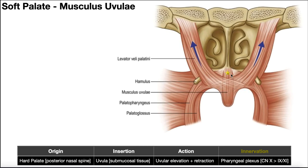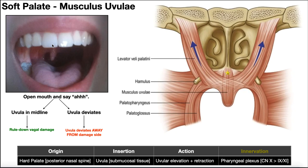Unlike levator palatini, which is clearly two muscles on either side, musculus uvulae is essentially one midline muscle. However, we can think of it as split down the middle, with the left half innervated by the left pharyngeal plexus and the right half by the right pharyngeal plexus. This is extremely important when checking for dysfunction of the vagus nerve, cranial nerve 10. When a person opens their mouth and says 'ah,' the uvula should elevate and retract, with equal pull left and right, placing the uvula directly in the midline.